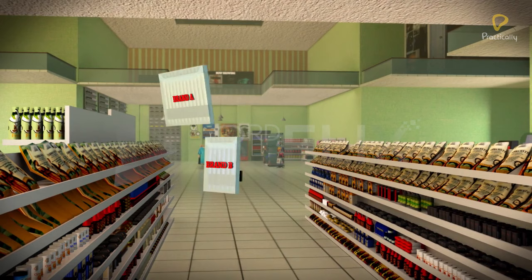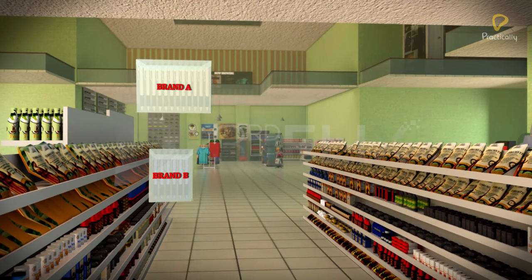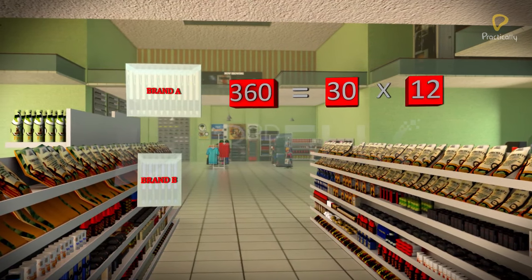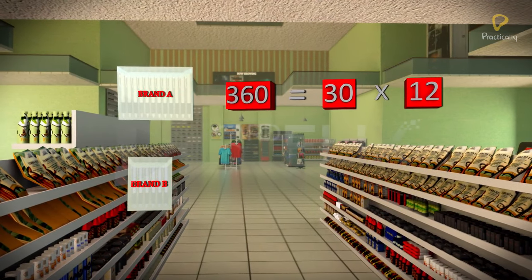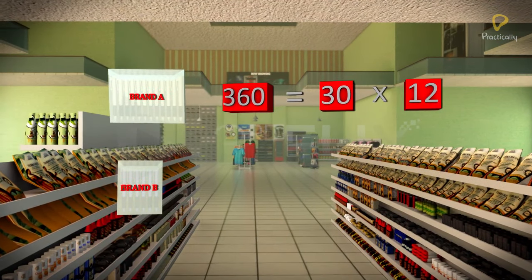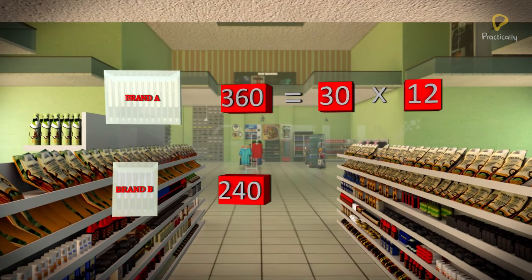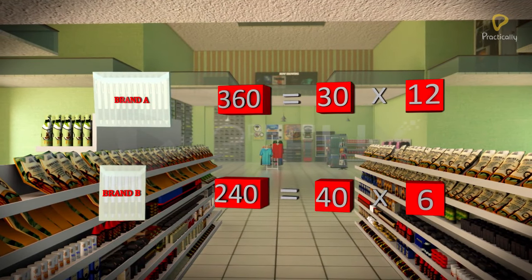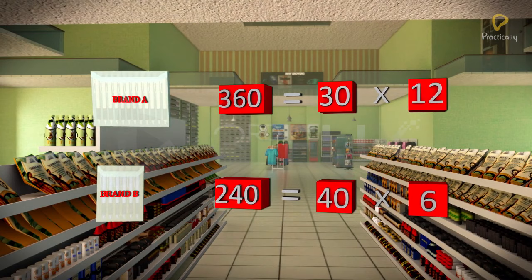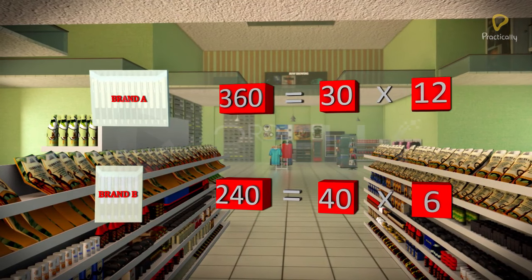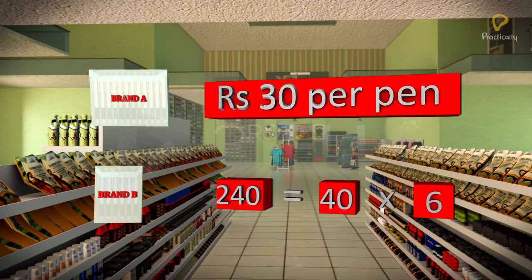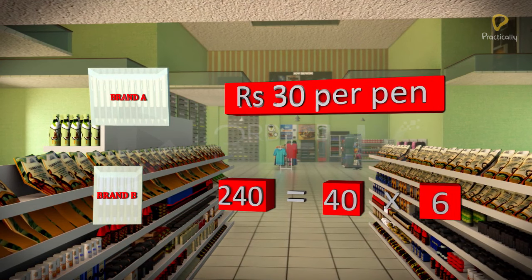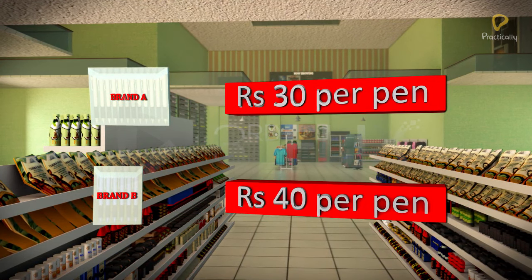Dividing 360 by 12: the factors of 360 are 30 and 12. Dividing 240 by 6: the factors of 240 are 40 and 6. Using this information, you know that the 12-pens packet costs 30 rupees per pen, and the 6-pens packet costs 40 rupees per pen.